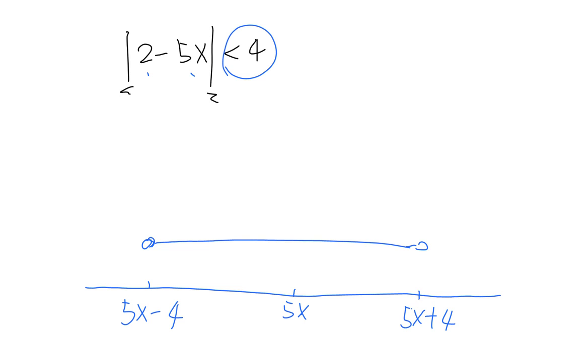So now we know that we can change this to: 2 minus 5x is smaller than 4 and greater than negative 4.